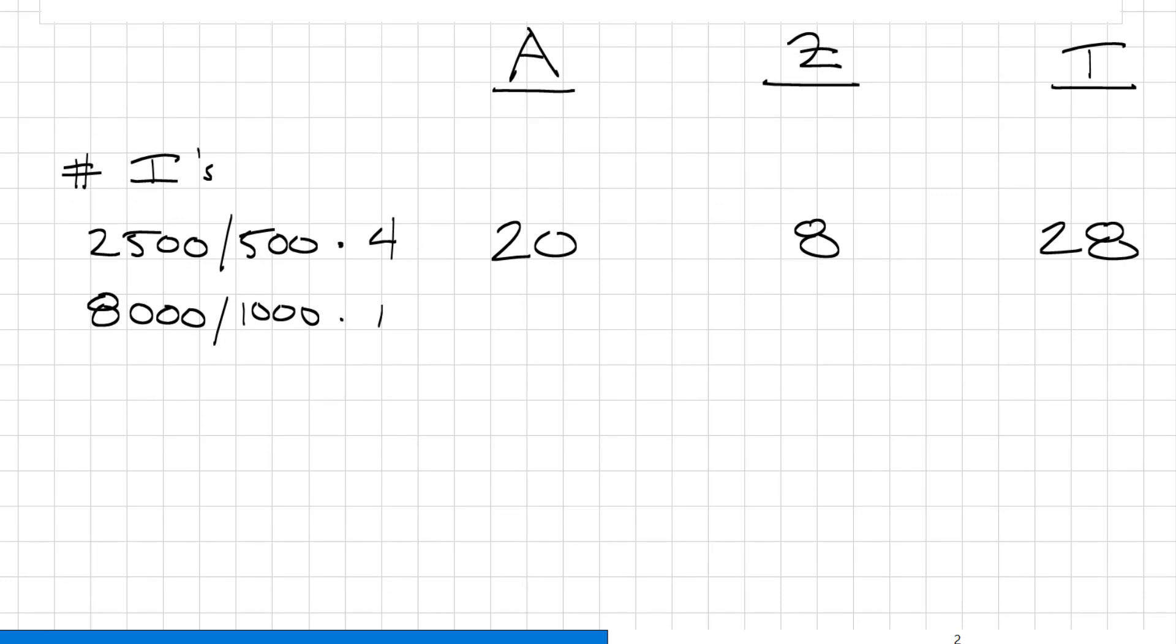Okay, and we need to assign overheads on the drivers. So we have overheads in dollars. We have 250,000 in overheads. We only care about product A, alpha. So that will be 20 over 28 multiplied by 250,000. And what do we get? 178,571.428.